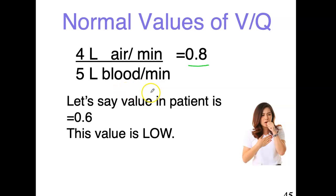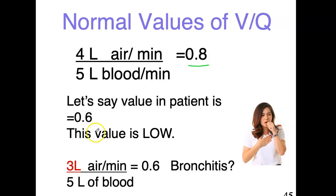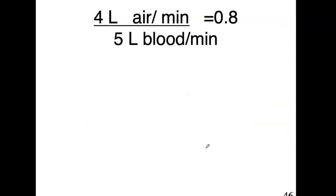Let's say you have a value in a patient that's low — 0.6. With some hypothetical numbers: 3 liters of air coming in instead of 4, and still 5 liters of blood coming past, this gives you a low VQ ratio. What could be causing less air to come in? An example is bronchitis, where everything is sort of closed up, you have less air coming in, and that VQ ratio is off. So when that value is low, you would suspect something like bronchitis.